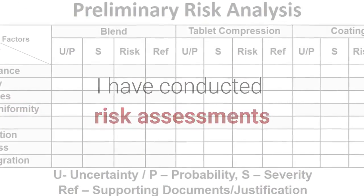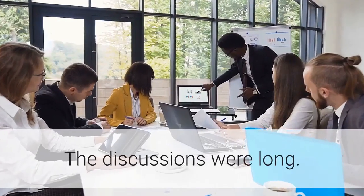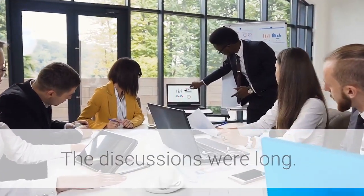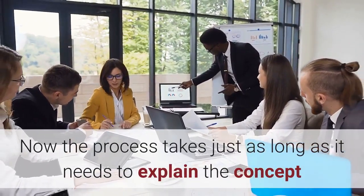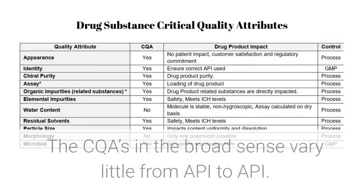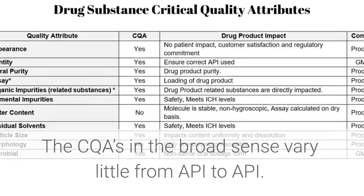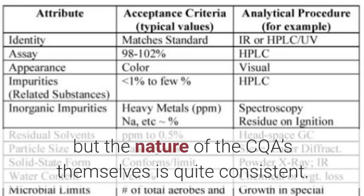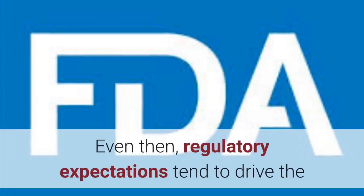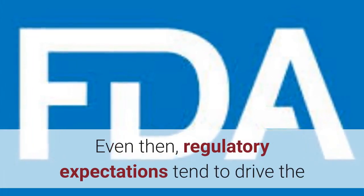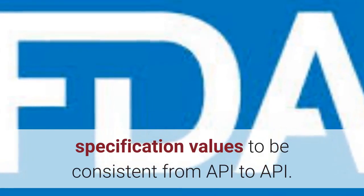I have conducted risk assessments and identified the CQAs for over 50 drug substances. The discussions were long, but now the process takes just as long as it needs to explain the concept to those who haven't done it before. The CQAs in the broad sense vary little from API to API. The actual acceptance ranges vary, but the nature of the CQAs themselves is quite consistent. Regulatory expectations tend to drive the specification values to be consistent from API to API.